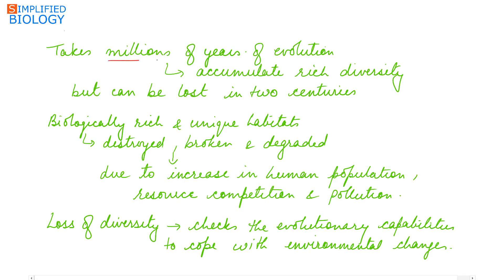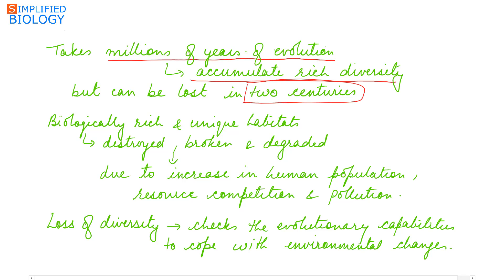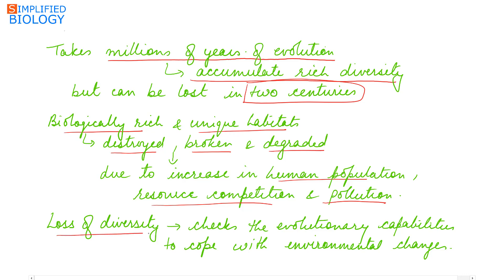It takes millions of years for evolution to accumulate such rich diversity, but this diversity can be lost in just two centuries if the present rate of species loss continues. Biologically rich and unique habitats are being destroyed, degraded, and broken down due to increases in human population, competition for resources, and pollution. Loss of diversity reduces the evolutionary capability of organisms to cope with environmental changes.